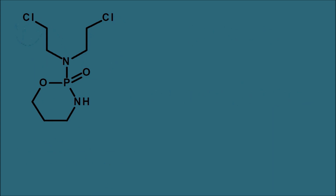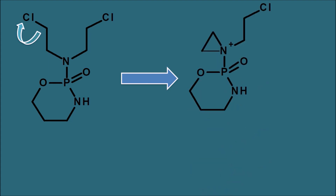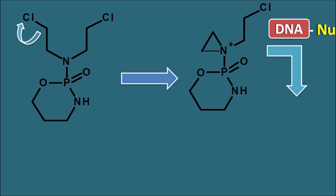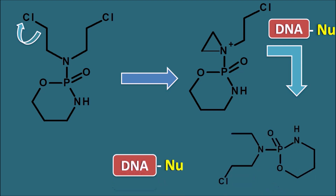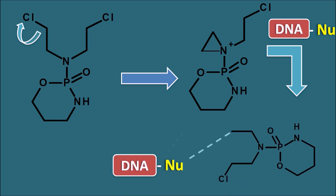In the structure, chlorine acts as a leaving group. When chlorine is removed, cyclophosphamide forms a highly reactive intermediate — the aziridinium ion. This aziridinium ion can interact with any nucleophilic site, and within DNA, it attacks those nucleophilic sites, opening the aziridinium ring and forming a linkage.